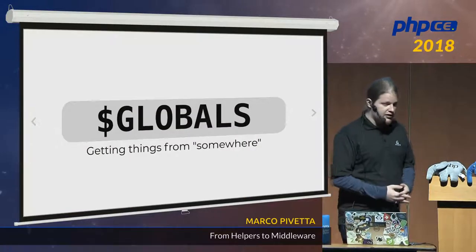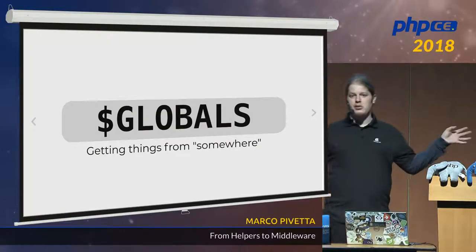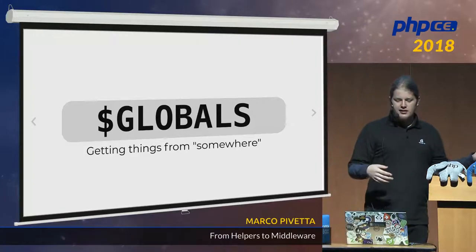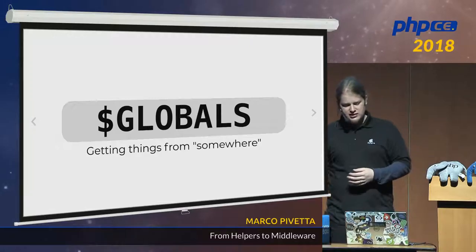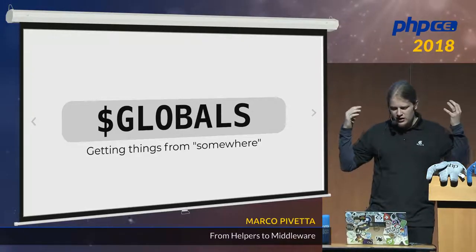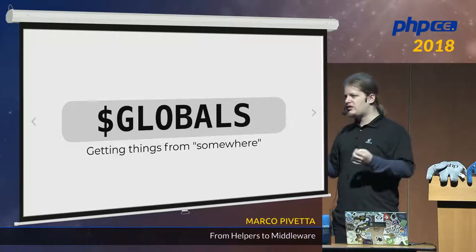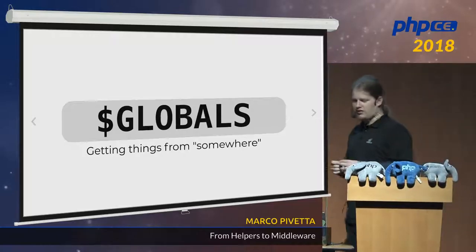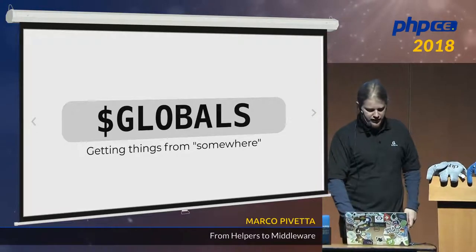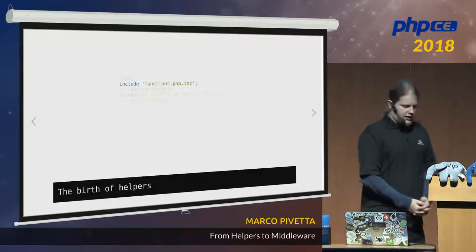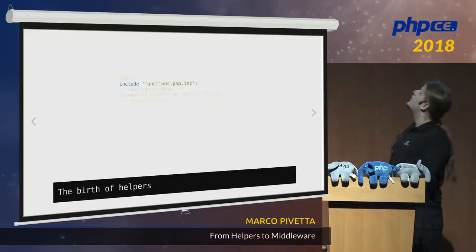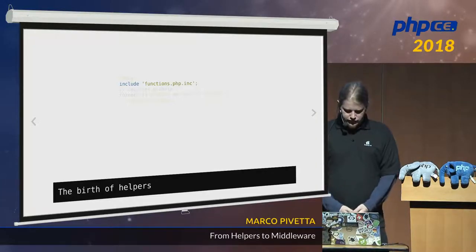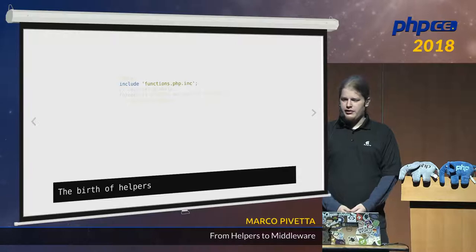It was not about getting it done safely. We relied a lot on globals. We just fetched things from somewhere — the database connection was available, somebody else provided it. Parameters already existed — we didn't check if they existed, we assumed things. The keyword is assumption: something is somewhere, we rely on it to exist, and if it doesn't it crashes. And if it crashes we don't even know about it because we didn't have any better tooling. And this is where functions.inc.php — dot inc, of course — is the birth of the helper in my opinion.